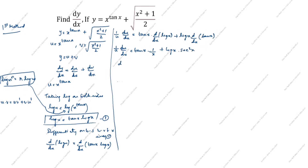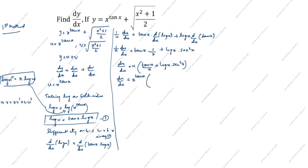So (1/u) du/dx equals tan x over x plus log x times sec²x. Therefore du/dx equals u times open bracket (tan x)/x plus log x times sec²x. Substituting u equals x power tan x: du/dx equals x^(tan x) times open bracket (tan x)/x plus log x times sec²x close bracket. This is the second equation.